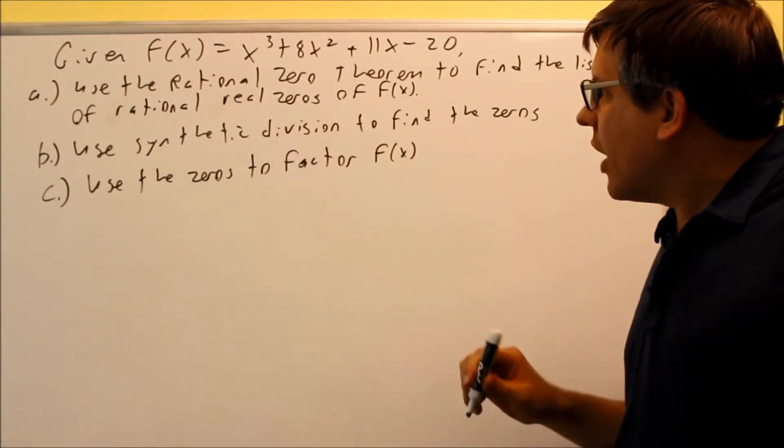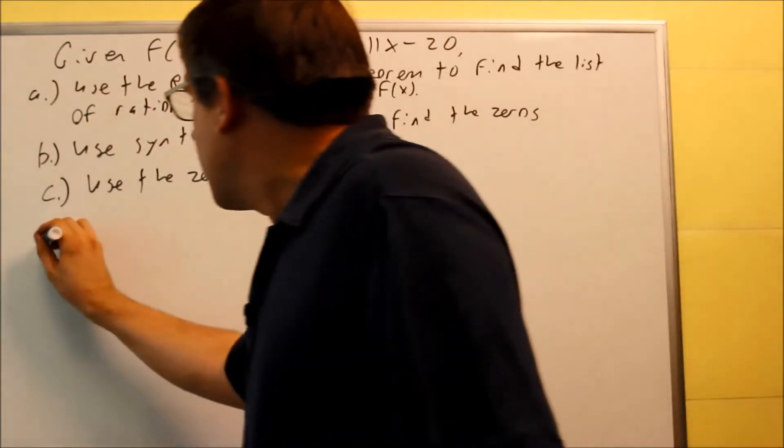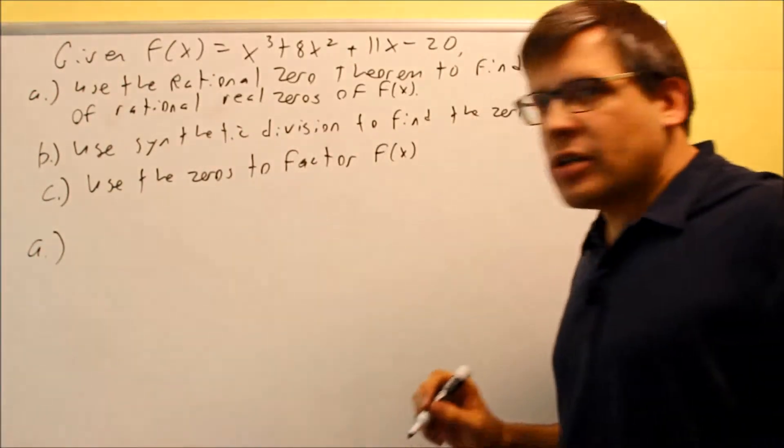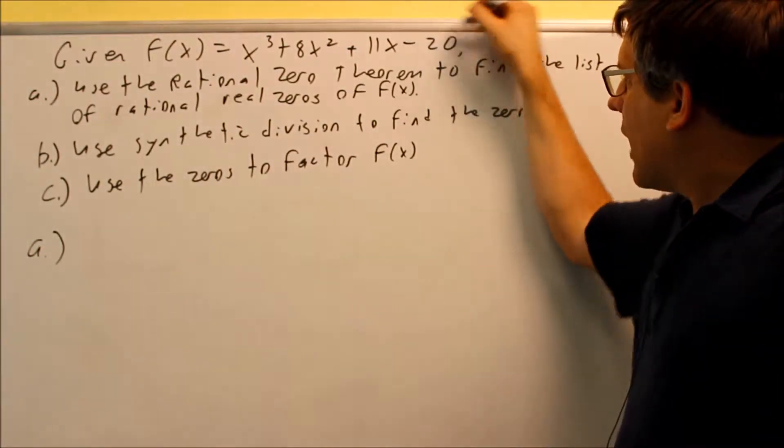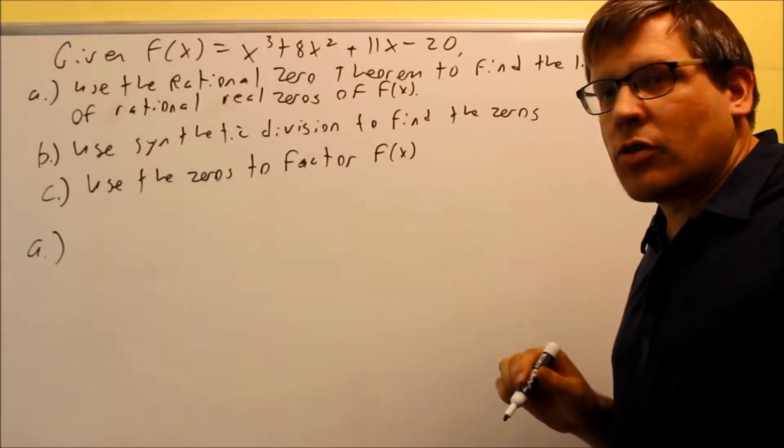So the first thing we have to do, the rational zero theorem. The rational zero theorem says that we're going to take the factors of the last number divided by the factors of the first number.